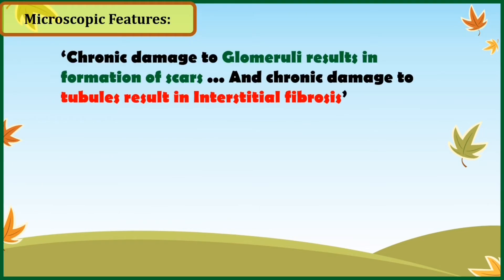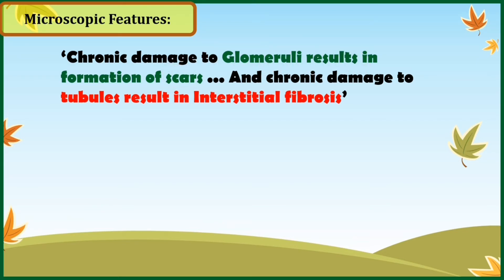Now let's look at the microscopic features of chronic kidney disease. The key points to remember are that chronic damage to glomeruli results in formation of scars, and chronic damage to renal tubules and interstitium results in interstitial fibrosis. This implies that in chronic kidney disease, damage is occurring at two levels: at the level of glomeruli, and at the level of renal tubules and renal interstitium.